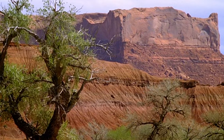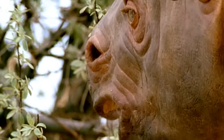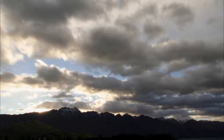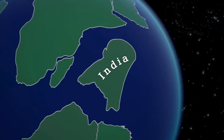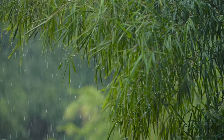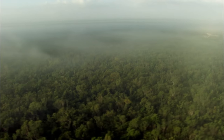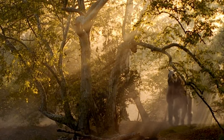Climate change had a significant impact on the planet's ecosystems and biodiversity. During this period, there were several significant changes in the Earth's climate. First, India moved closer to the equator, resulting in increased rainfall and higher temperatures. This led to the development of tropical forests and increased biodiversity in the region.